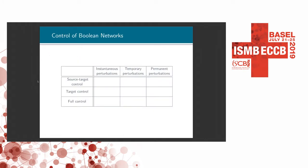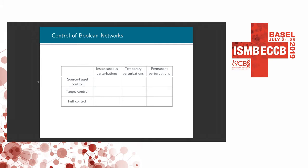Depending on how long the control is applied, we can have instantaneous perturbations, temporary perturbations, and permanent perturbations. Instantaneous perturbations means we apply the control and then release it. The advantage is that they are the least invasive and don't require observability of the system. In our previous work, we developed efficient methods to solve the source-target control problem with different perturbation types. In this work, I will mainly talk about our method for minimal target control and minimal full control with instantaneous perturbations.